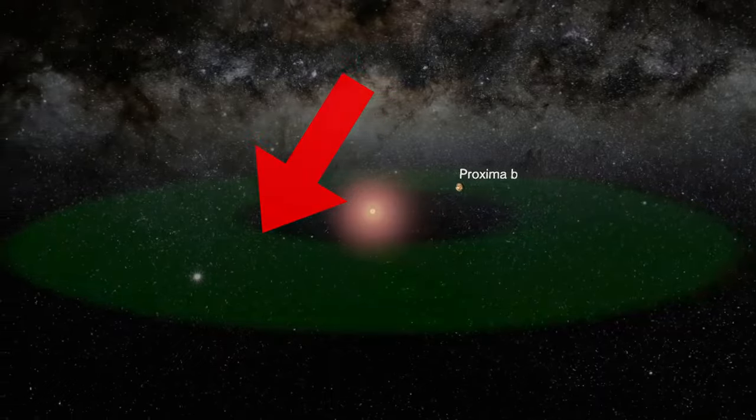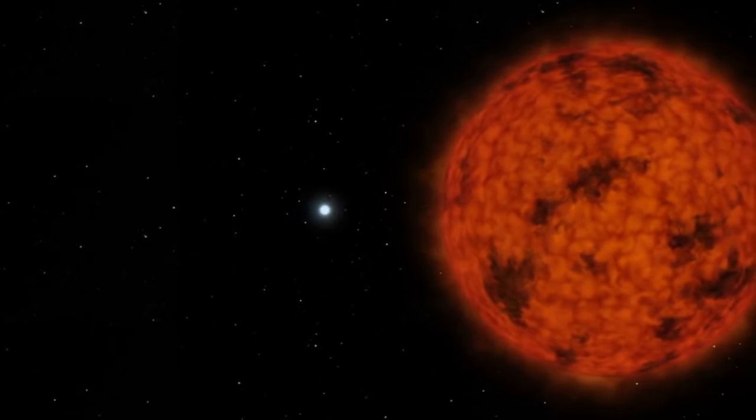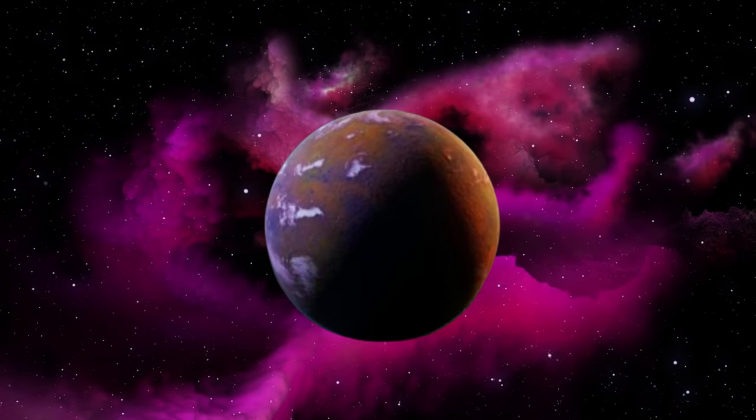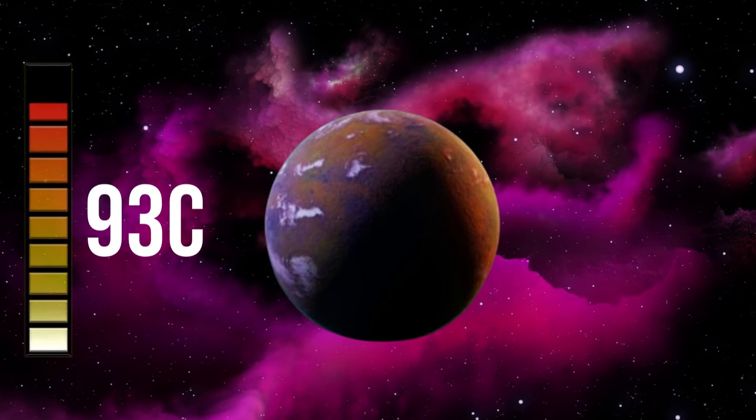It is considered to be on the innermost edge of the habitable zone, as since Proxima is a red dwarf, it emits less heat than our sun. However, it is estimated that if Proxima D has no atmosphere, it will sit at about 93 degrees Celsius.